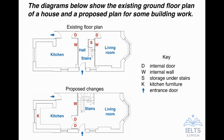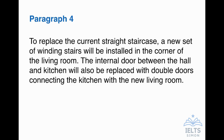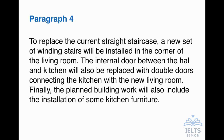Paragraph four covers the elements not yet described: the new stairs, the wall and doors, and the kitchen furniture. Here's what I wrote: 'To replace the current straight staircase, a new set of winding stairs will be installed in the corner of the living room. The internal door between the hall and kitchen will also be replaced with double doors connecting the kitchen with the new living room. Finally, the planned building work will also include the installation of some kitchen furniture.' That's three sentences and both diagrams fully described. There is no conclusion for Task 1.